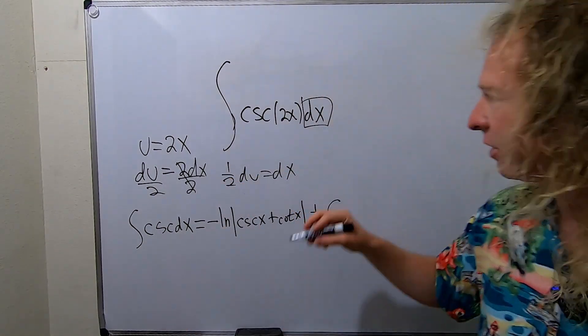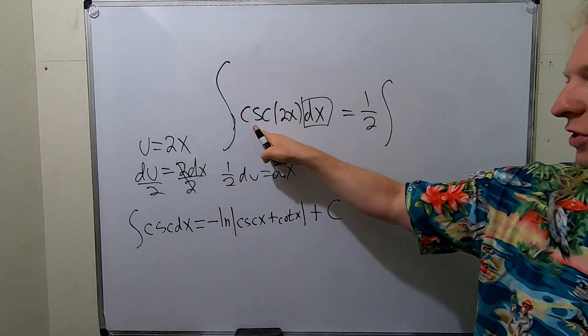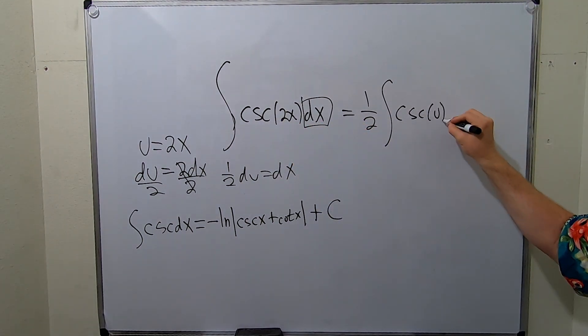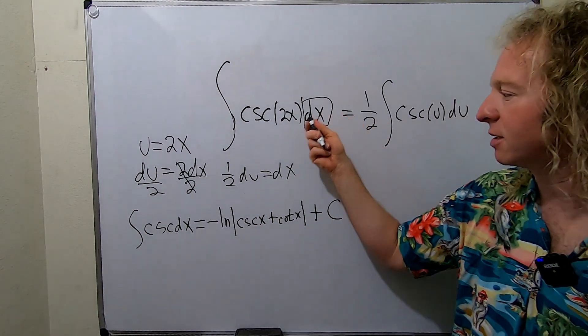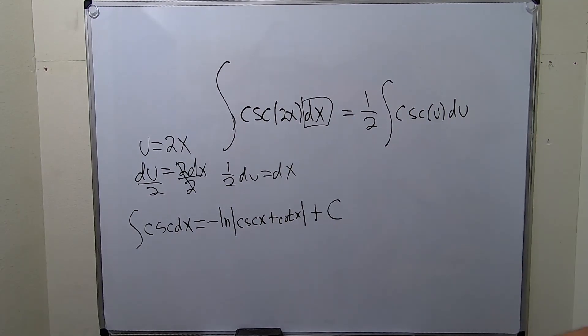So this is going to be 1/2 integral cosecant of u du, right? Because the dx becomes your 1/2 du. So now we get to use our super powerful formula for the integral of the cosecant function.